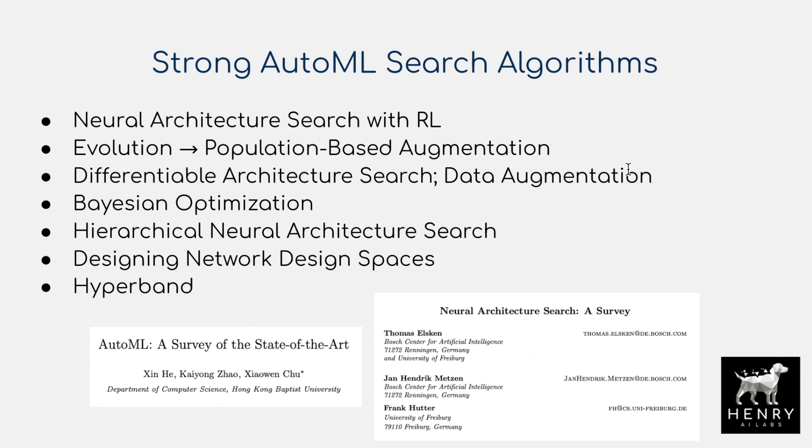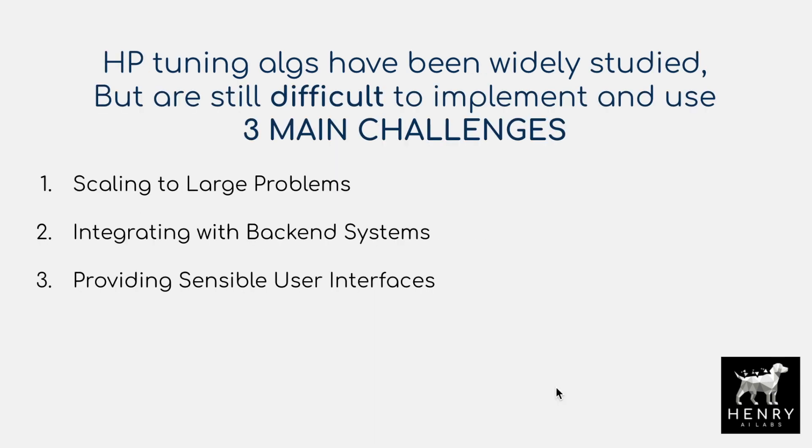The high-level idea is that although there are really exciting and powerful AutoML search algorithms, they are not easy to use. Despite the research and development of these AutoML and hyperparameter tuning algorithms, they're still difficult to implement because of three main challenges. The first is scaling to large problems, where we want to use distributed computing and hyperparameter search algorithms that exploit parallel computing, noting that each model could take hours to train.